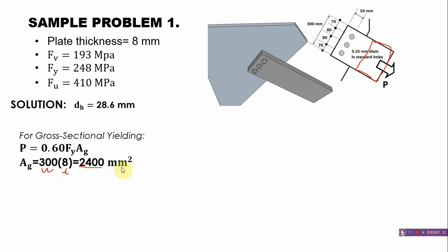The gross sectional area is 2400 square millimeters. Substituting into the formula: 0.60 × 248 × 2400 × 1×10^-3 = 357.12 kilonewtons. That's for our gross sectional yielding.